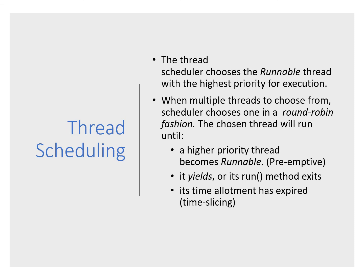The scheduler chooses the available thread with the highest priority for execution. If multiple threads have the same priority, it chooses one in a round-robin fashion. When a higher priority thread becomes runnable, it preempts lower-priority threads. There's also a dot yield method which an executing thread can call to say it's finished for now and give the CPU to somebody else — this prevents starving other threads of execution time.